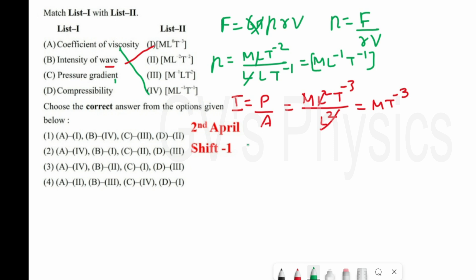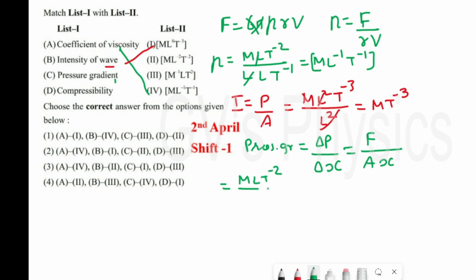Next is pressure gradient, which is change in pressure with respect to position (dP/dx). Pressure = force/area = MLT⁻²/L² = ML⁻¹T⁻². Dividing further by length L gives ML⁻²T⁻². So pressure gradient C matches with 2.